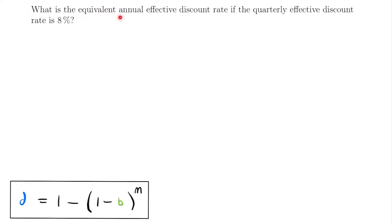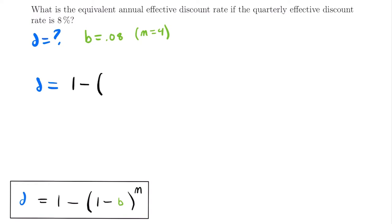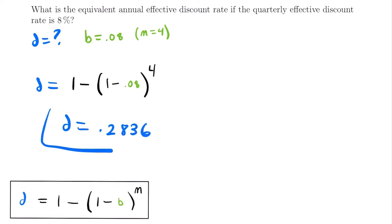For our example: what is the equivalent annual effective discount rate if the quarterly effective discount rate is 8%? We are looking for D. We know B = 0.08, and since it's quarterly, M = 4. Plugging into our formula: D = 1 − (1 − 0.08)^4. Calculating this gives D = 0.2836. That is the annual effective discount rate when the quarterly effective discount rate is 8%.